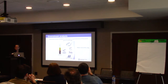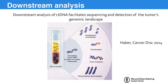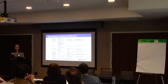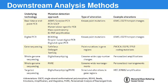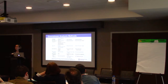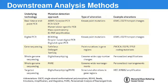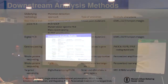The downstream analyses of cell-free DNA facilitate the sequencing and detection of the tumor's genomic landscape. There are many different methodologies used. The gold standard has been digital droplet PCR; however, with this you need to know what you're looking for, so it doesn't allow for discovery. Other methods include beaming PCR methodology, next-generation sequencing, and more targeted panels.